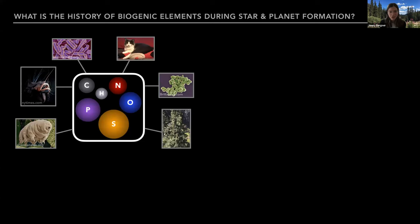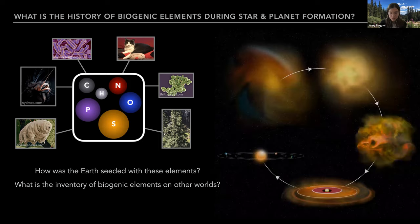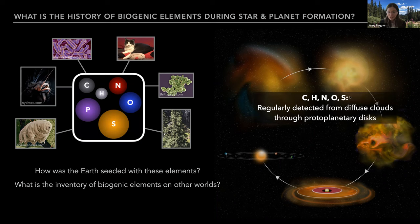These small handful of molecules show up across all different life forms on Earth. In the great wealth of diversity in terrestrial life, the underlying basis set of this biochemistry is these biogenic elements. So naturally we want to understand both how Earth was seeded with these elements and what the inventory of biogenic elements is on other worlds. We tackle these questions by studying the inheritance of carriers of these elements along the star and planet formation sequence. For carbon, hydrogen, nitrogen, oxygen, and sulfur, carriers of these elements are regularly detected at all stages of star formation, from the diffuse cloud stage through the protoplanetary disk stage, giving us a good understanding of the forms these elements are stored in and the relative chemistries that connect the carriers.